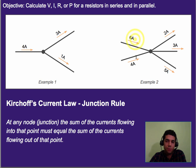Here we have a more complicated example. We have 6 and 4 going in and so that means 10 total going in, so we should expect 10 coming out. In this case 2 and 3 gives us 5 and then 5 gives us 10. So that's Kirchhoff's current law.